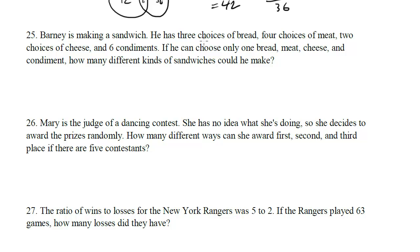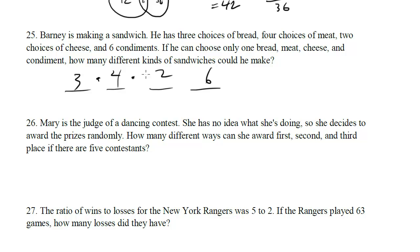Question 25: Barney is making a sandwich. He has three choices of bread, four choices of meat, two choices of cheese, and six condiments. If he can only choose one of each, how many different sandwiches could he make? This is a counting problem — we've got four decisions to make, so we draw four lines: 3, 4, 2, 6. Once we have that down, we multiply them all out and get 144, which is our answer.